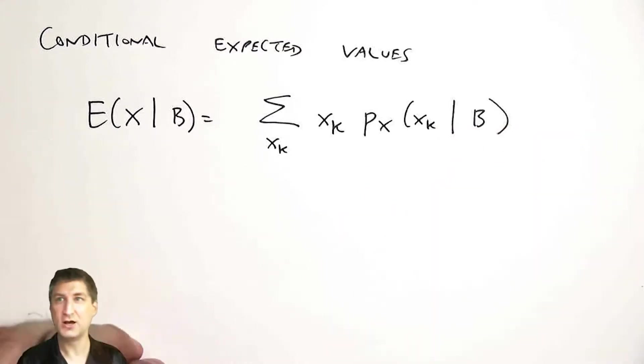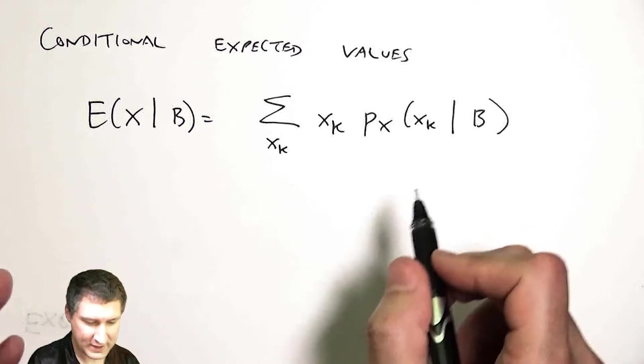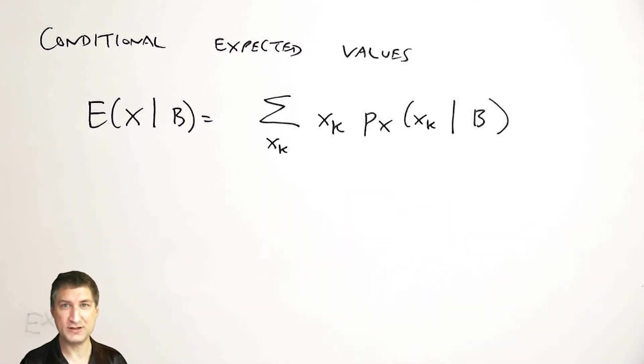So this thing here we talked about a couple of lectures ago is itself a PMF. It's just a different PMF that has got the masses moved around having seen that this event b occurred. So this is just a different way of computing the expected value for this new PMF.